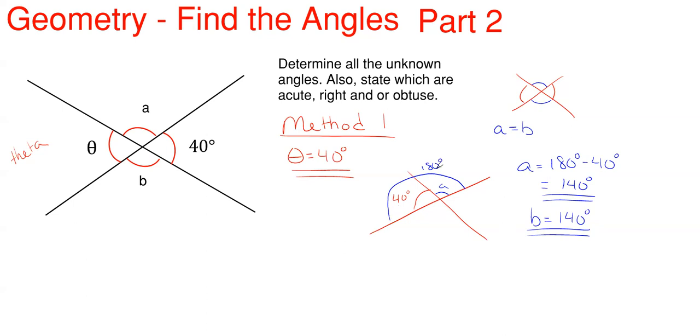The reason why I know this is 180 degrees, I didn't really elaborate too well on that, but a straight line will always be 180 degrees. And any two angles making up that 180 degrees will be supplementary angles, which means they will tally up to be that 180 degrees. So theta, which is 40, and A will be supplementary angles. They add up to 180.